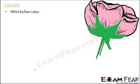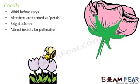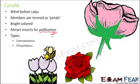Next is the corolla, which is the whorl just inner to calyx. Its members are termed as petals and these are brightly colored — red, green, blue, yellow, anything. That is what gives a flower its color; when we say a flower is red, it is essentially the petals that are large and noticeable enough to represent the flower's color. Their bright color attracts insects which help in pollination, which is extremely important for sexual reproduction.